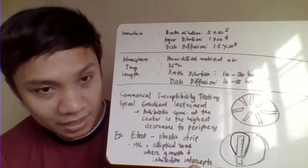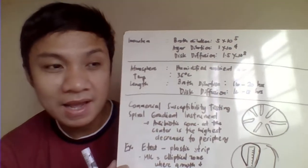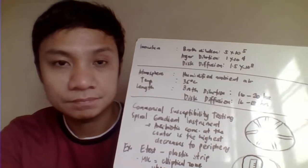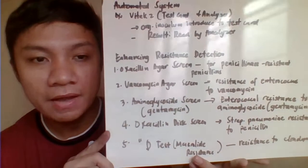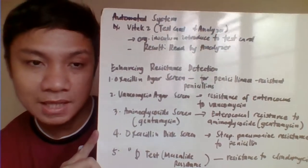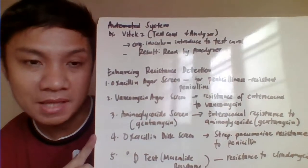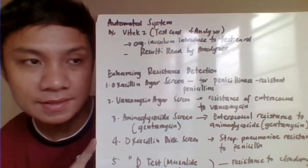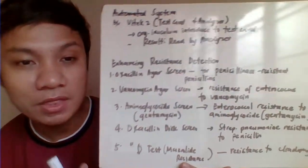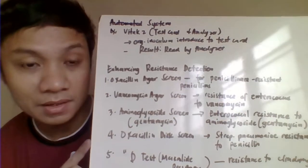The MIC on the E-test is where growth and inhibition intercept on the strip. The interpretation remains the same as other methods. For automated systems, you can use the Vitek 2, which is a card-based automated instrument. You fill the card with the bacterial inoculum, insert it into the instrument, and the automated analyzer interprets the results.